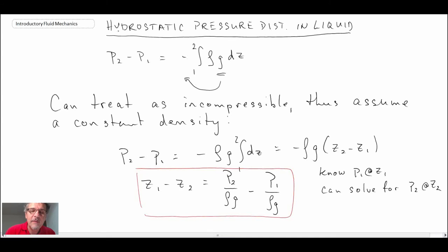That's something we'll use quite often when we look at things like manometers. A couple other things: rho g appears quite often in the equations. Rho g is specific weight.